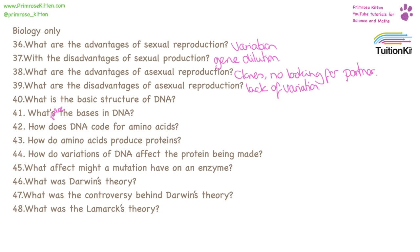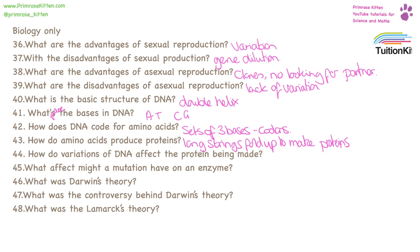The basic structure of DNA is a double helix. The bases in DNA are A together with T, and C together with G. DNA codes for amino acids by sets of three bases, which are triplet codons. Longer strings of amino acids fold up together to make proteins. Variations within the DNA can affect amino acids selected for the protein, which means the protein might misfold and not work properly — for example, in an enzyme the active site might be the wrong shape.